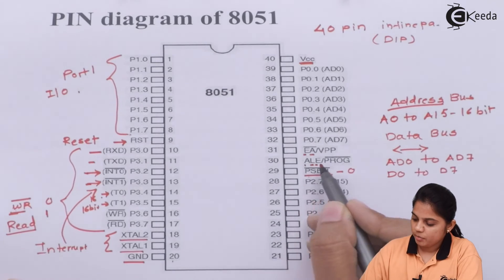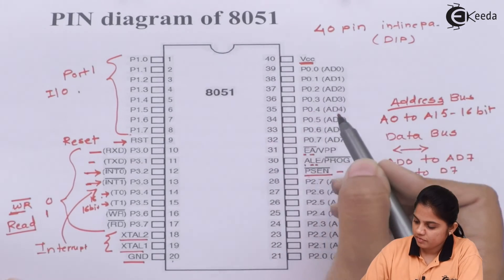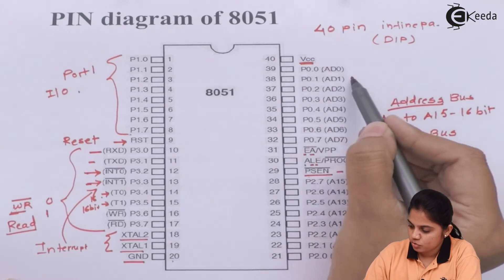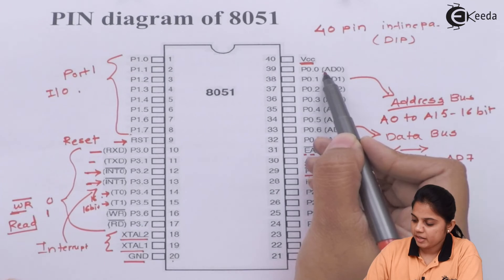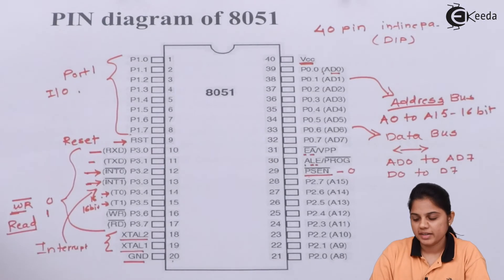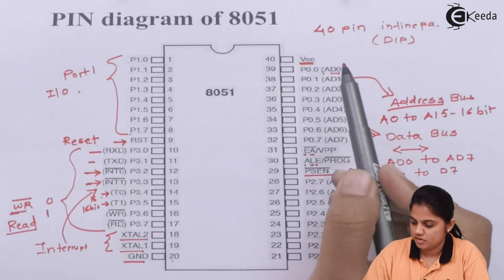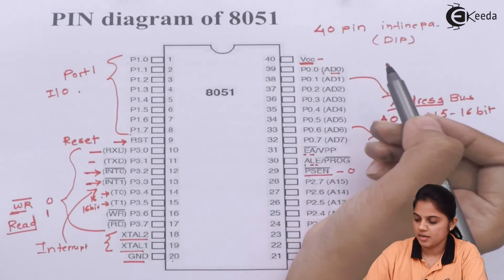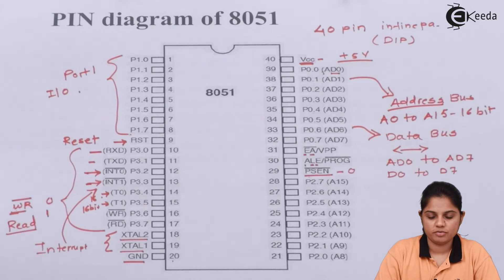Pin numbers 32 to 39 are given for AD0 to AD7. These 8 pins can be used for addressing as well as for data, since they are indicated by AD — where D stands for data bus. When performing data bus operations they function as D0 to D7; otherwise they are used for the address bus. The last pin, pin 40, accepts VCC — a +5V supply — to keep the chip active.